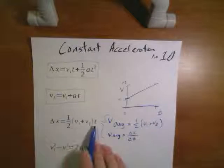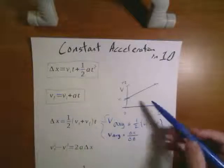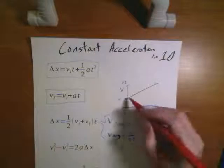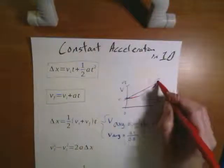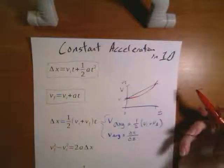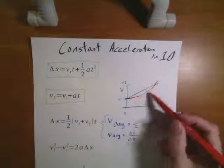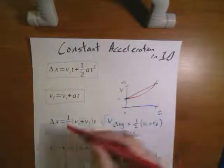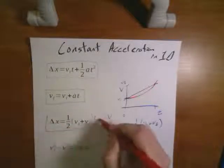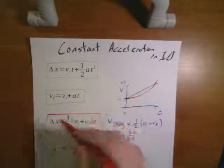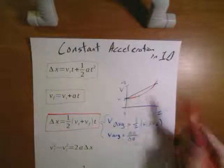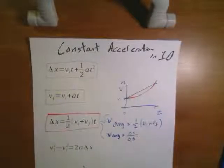We can only use this one for constant acceleration, because if the acceleration was changing, you might have a graph like this, and in that case the average isn't necessarily right in the middle. So this equation can only be used if you've got constant acceleration so that your velocity line is a nice straight line.